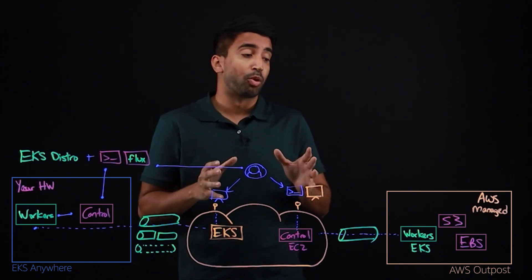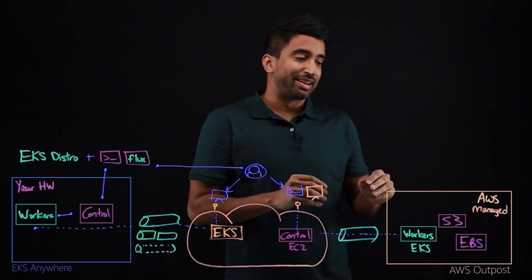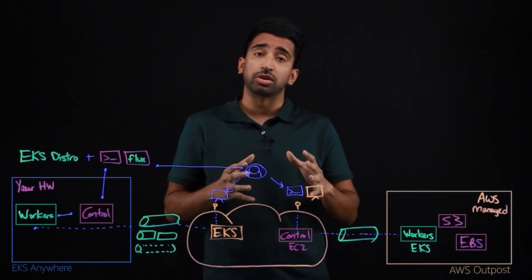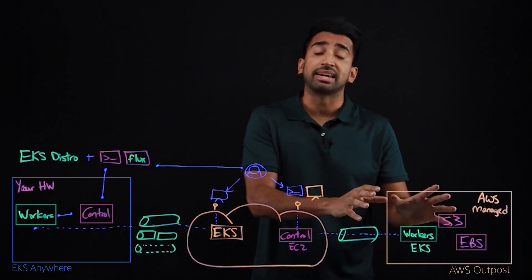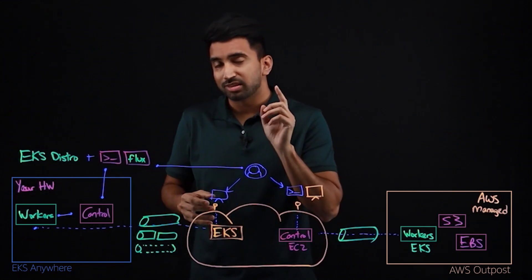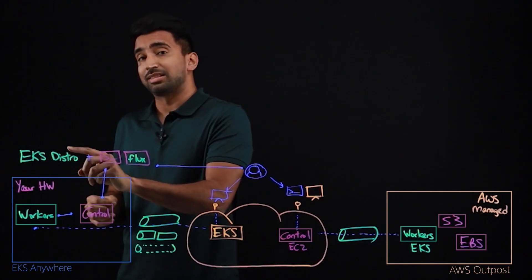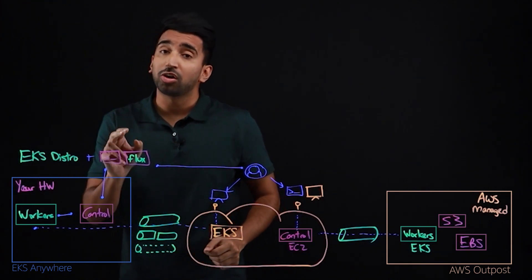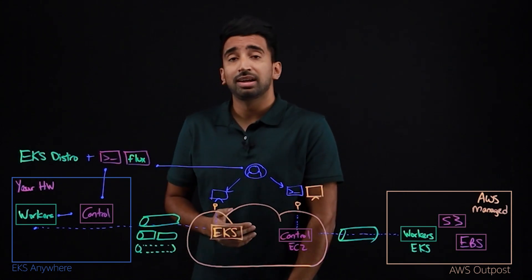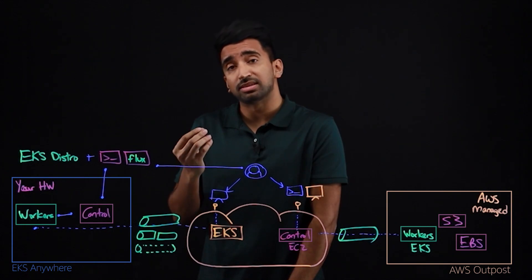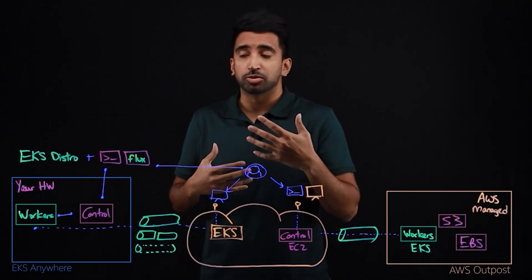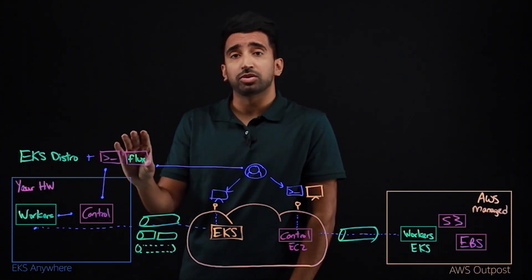Now let's talk about support. An AWS Outpost is like an extension of an AWS region, so that same support you get with EKS running in the cloud essentially covers you when running EKS on an Outpost. With EKS Anywhere, it's an open source capability, so you'll need to get support through a subscription. But something really interesting: we'll support not just the EKS Distro — the Kubernetes distribution itself — but also the opinionated flows with capabilities we bundle with it. That includes the GitOps-based approach with Flux, the CNI (Container Network Interface) which is Cilium, as well as operating systems like Bottlerocket and Ubuntu. So with that subscription-based support mechanism, those open source capabilities are covered as well.